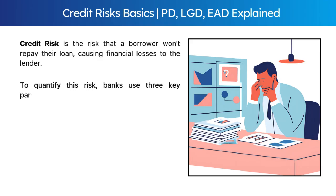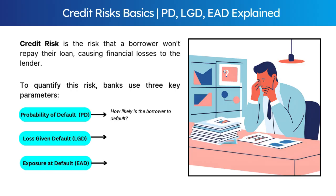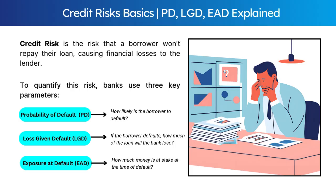To quantify this risk, banks use three key parameters: probability of default, loss given default, and exposure at default. PD tells us how likely the borrower is to default. LGD tells us how much of the loan the bank will lose if the borrower defaults. EAD tells us how much money is at stake at the time of default. These three factors help banks calculate expected losses and determine how much capital they need to set aside, as per Basel 2 and Basel 3 guidelines.